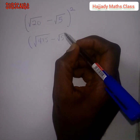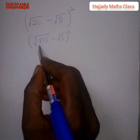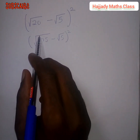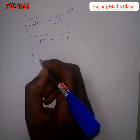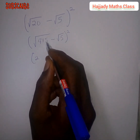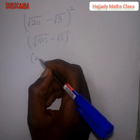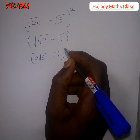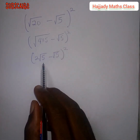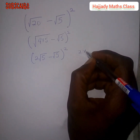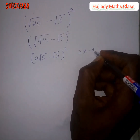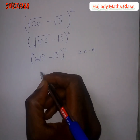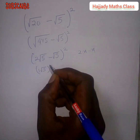We now have (√(4×5) minus √5) all squared. We can find the square root of 4, which is 2. Since 5 is not a perfect square, √5 remains. So we have (2√5 minus √5) all squared. This is like having 2x minus x, which equals 1x. So the coefficient becomes 2 minus 1, giving us 1√5, or just √5, all squared.